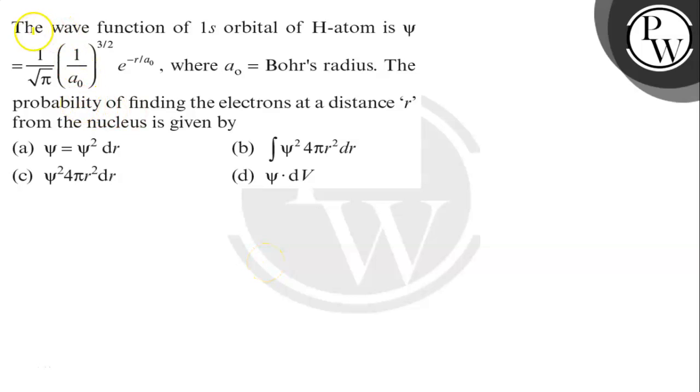Hello, let's read the question. The wave function of 1s orbital of H-atom is ψ = (1/√π)(1/a₀)^(3/2) e^(-r/a₀), where a₀ equals Bohr's radius. The probability of finding the electron at distance r from the nucleus is given by...